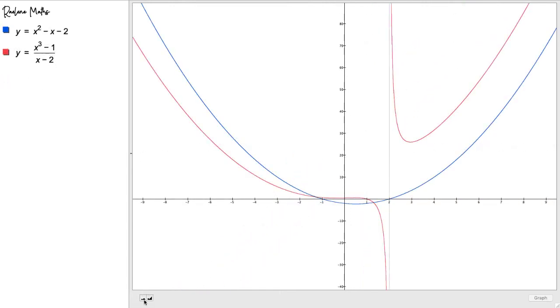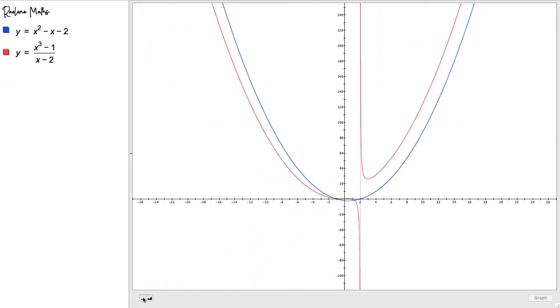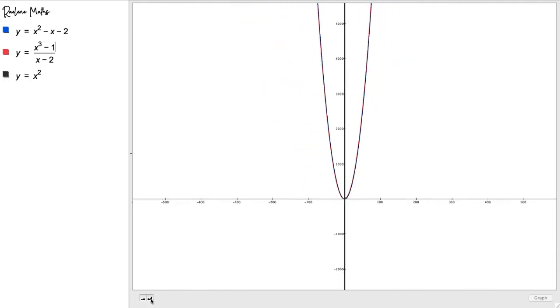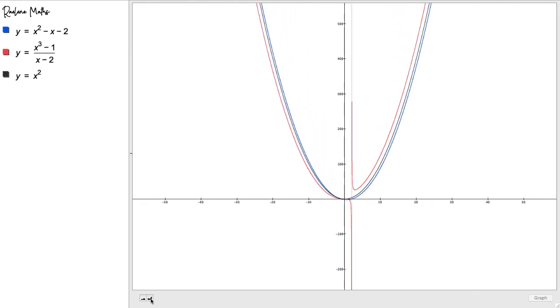Slant asymptotes are not the only type of end behavior or asymptotic behavior. Here we have two graphs that look like a parabola when we zoom out. We can call this end behavior a parabolic asymptote.